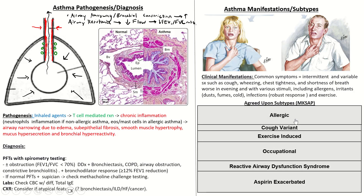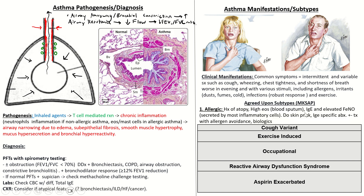Going through the agreed-upon subtypes of asthma. Allergic asthma: it's important to make this diagnosis by looking at history, atopy, elevated IgE, and then identifying the specific trigger through skin prick testing or allergen-specific IgE antibodies. This helps you treat with allergen avoidance, biologics, or allergen desensitization immunotherapy, all of which can significantly improve control.